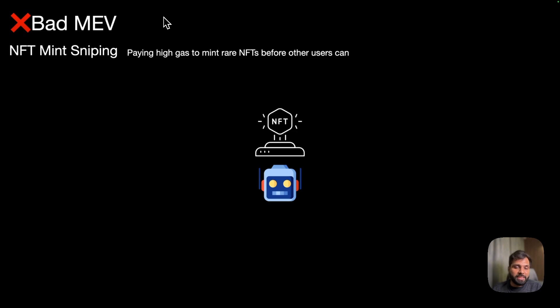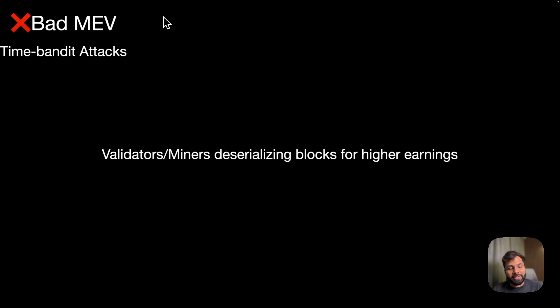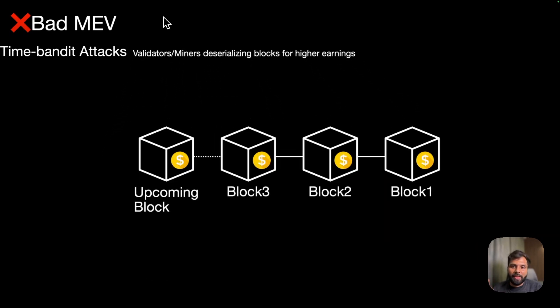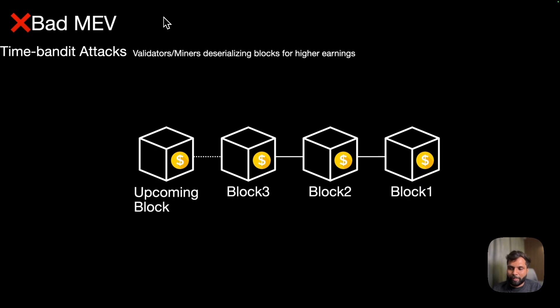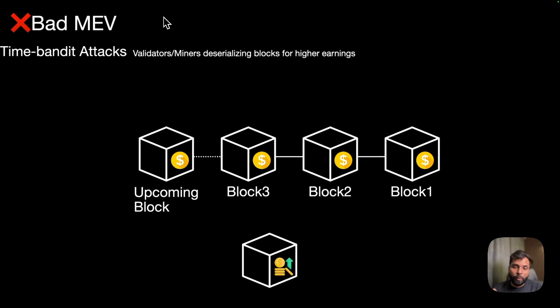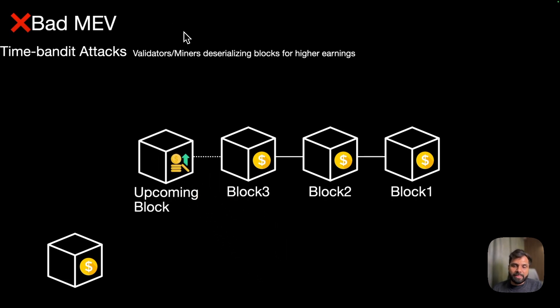The last and probably most serious type of bad MEV practice is time bandit attacks, where validators or miners reorganize the blockchain for better earnings. For example, consider a blockchain with blocks 1, 2, and 3 and an upcoming block. A validator or miner can see that there is another block — not yet in the queue — but with higher rewards. So the validator can replace the actual block in the queue with the block with higher rewards, destabilizing the consensus of the blockchain. In some cases, it can also do this to grab missed arbitrage opportunities from the past.